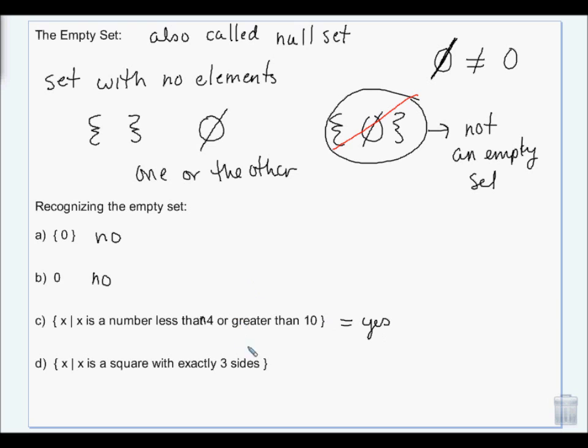How about a square with exactly three sides? No, impossible, right? So if you have impossibilities thrown in there, those sets are empty. Yeah, I have a set with my unicorn, my mermaid, and my dragon. It's not mythical characters, man. It's empty though, right? Because they don't exist.